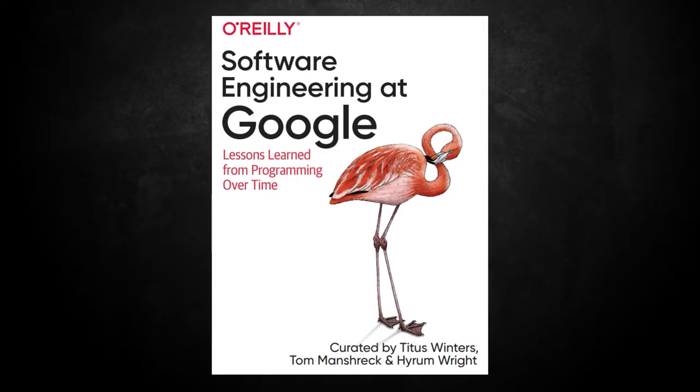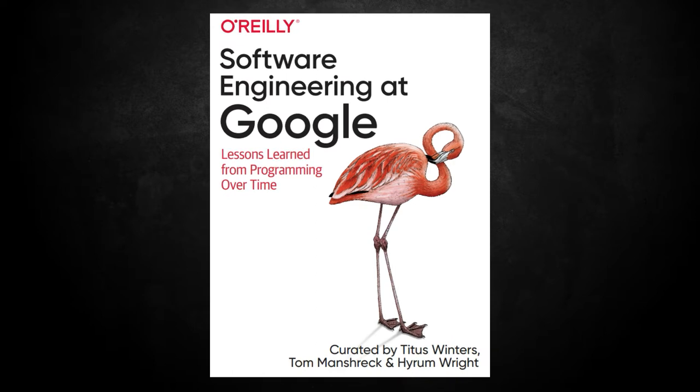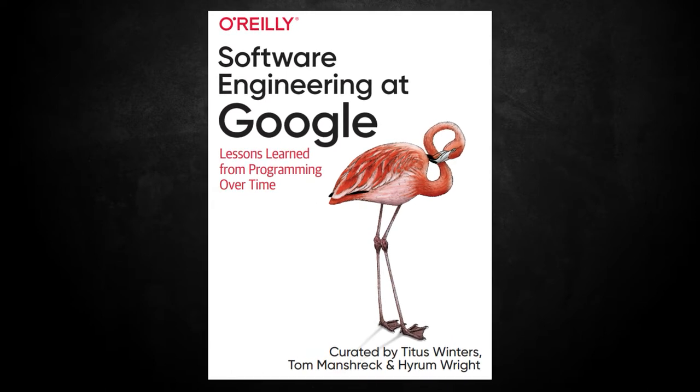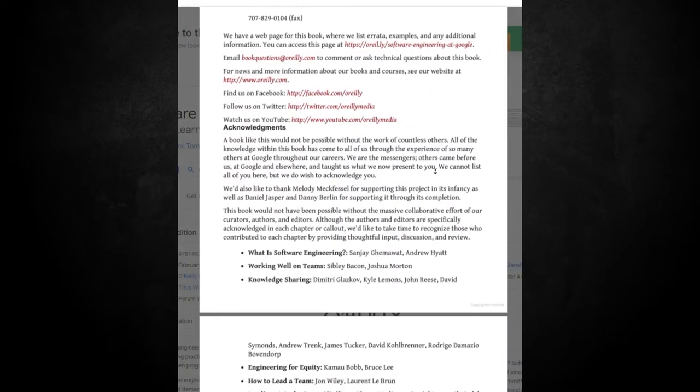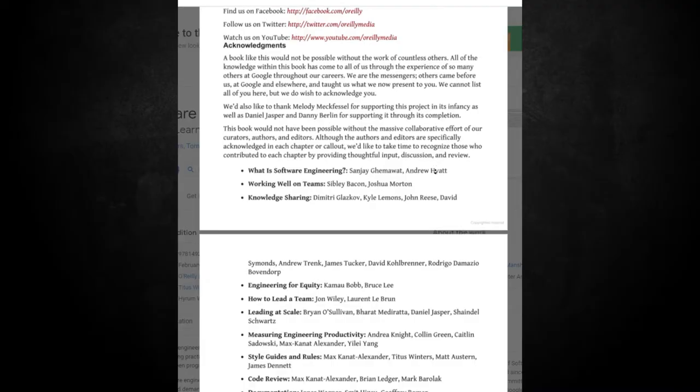Another notable definition comes from the book Software Engineering at Google. It says software engineering encompasses not just the act of writing code, but all the tools and processes an organization uses to build and maintain that code over time. Software engineering can be thought of as programming integrated over time. It's a pretty good read — check it out, there's a free preview link where you can view a couple hundred pages.